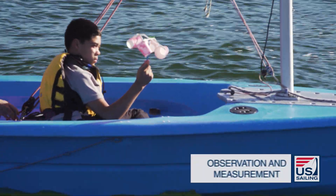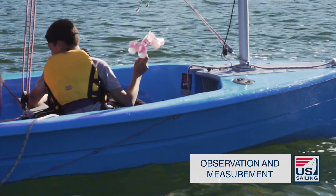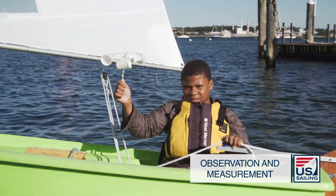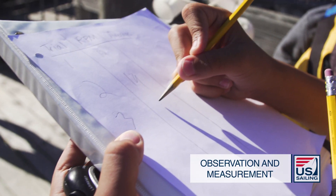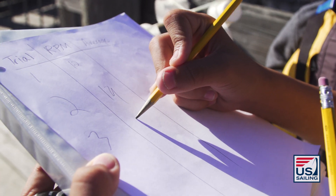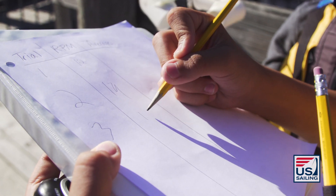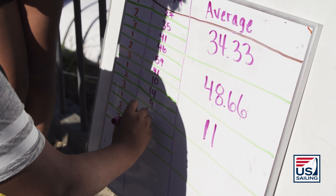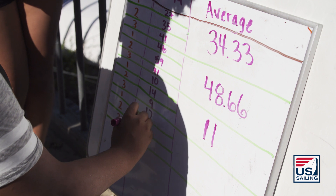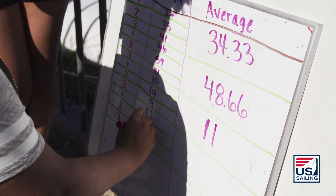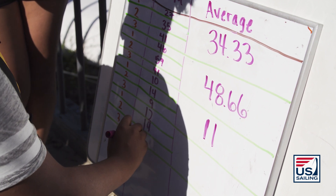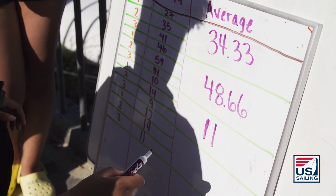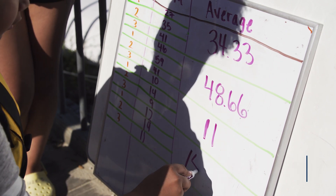Students conduct wind speed tests on land and on water. They observe the differences in wind speed in multiple locations and measure it with their new anemometers. Students learn how to represent their data by recording it on the chart. They analyze the data and compute the average of their trials to learn more about the wind speed.